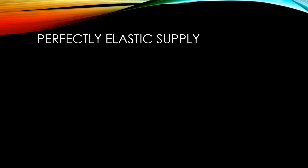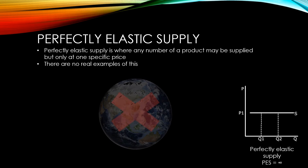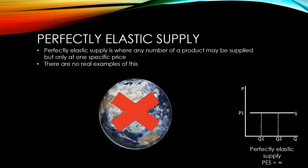Perfectly elastic supply would be where any number of a product may be supplied, but only at one specific price. There are no real-world examples of perfectly elastic supply.